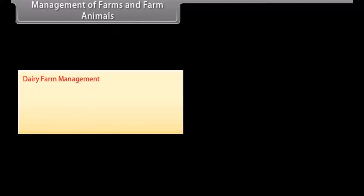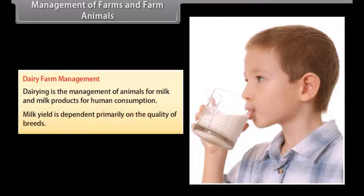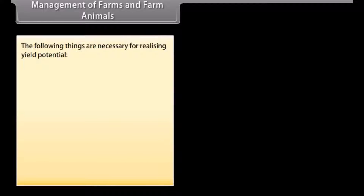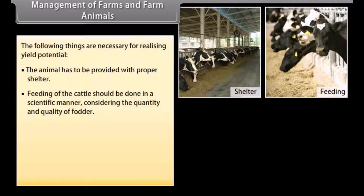Management of farms and farm animals. Dairy farm management: dairy farming is the management of animals for milk and milk products for human consumption. Milk yield is dependent primarily on the quality of breed. The following things are necessary for realizing yield production.